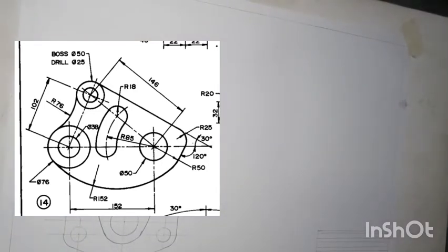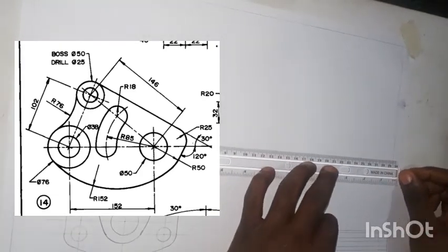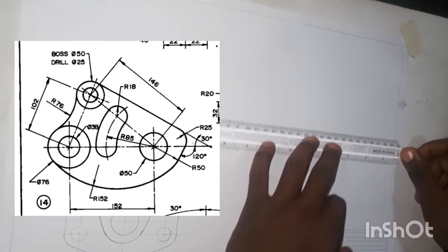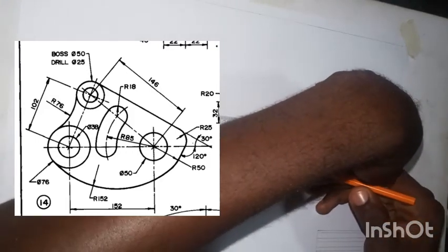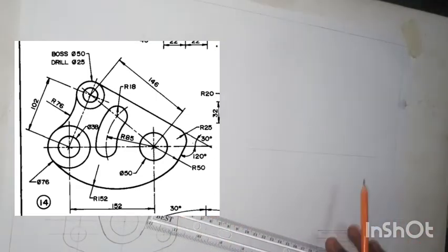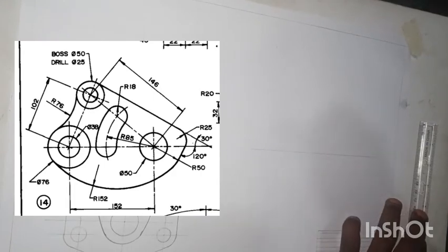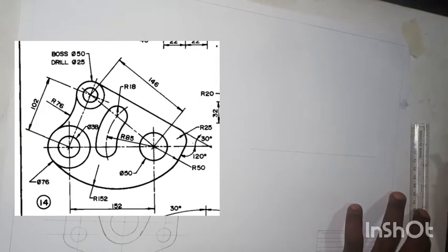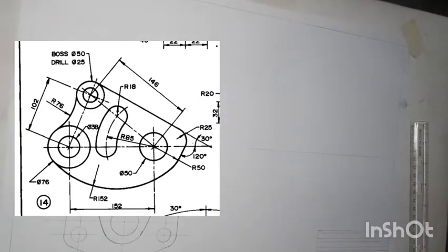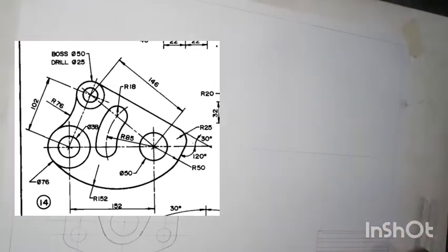We'll be starting from the left hand side and working from there. The dimensions coming to us — we have been instructed to use half of the dimensions in centimeters. So the first thing we are going to do is draw this small circle of diameter 38. That means the radius is 19, and since we are using half of the dimensions given to us, we will be using 9.5 as our radius.